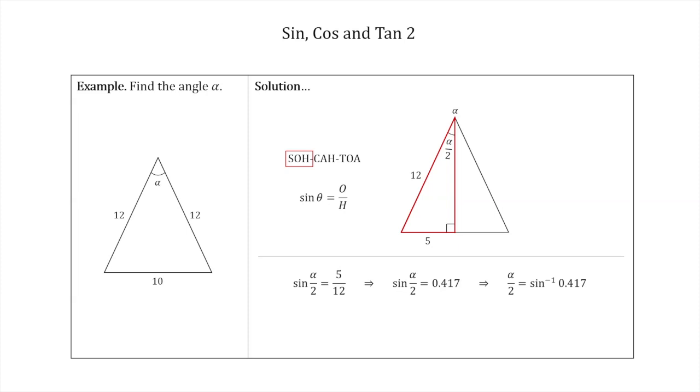We can find inverse sine of 0.417 and it is roughly 24.645, so alpha over two equals 24.645. We take the two to the other side and we get alpha equals 49.291. There we have used trigonometry to find this angle alpha in our isosceles triangle.